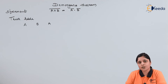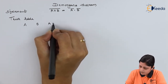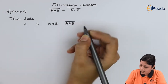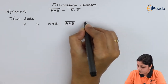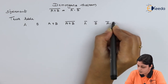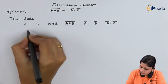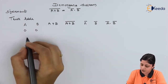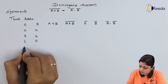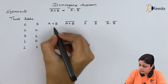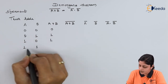With the use of a truth table we can prove this theorem. We have A and B as inputs, then A plus B, and the complement of A plus B. For two inputs there are four combinations: zero zero, zero one, one zero, one one. Applying the OR rule: zero plus zero is zero, zero plus one is one, one plus zero is one, one plus one is one.